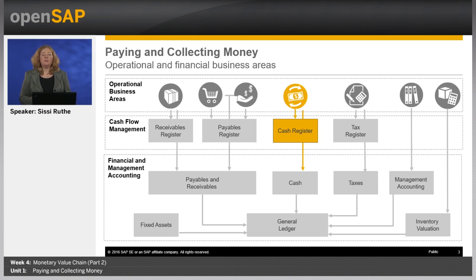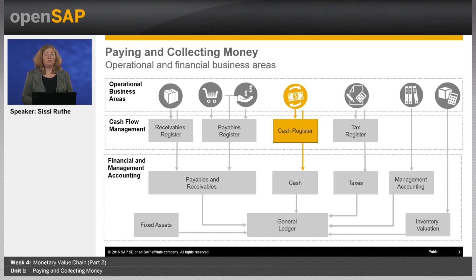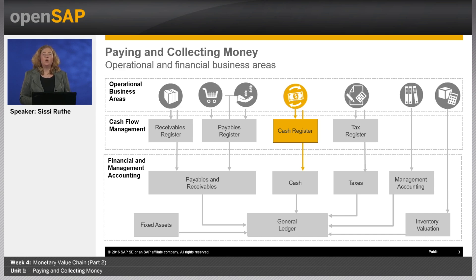As Melanie already explained this graphic in her first unit of Week 3, I just want to summarize it for your orientation this week. In SAP Business by Design, the goods and services value chain is separated from the monetary value chain that represents cash flow management. This was motivated by the fact that the monetary value chain, which contains invoicing and payment, is standardized to a great degree. All units of this week will focus mainly on the orange highlighted box, the cash register.